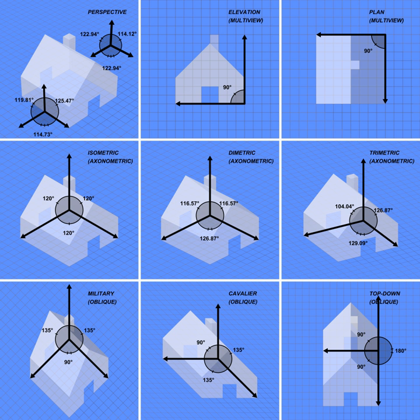It is shown like a three-dimensional object. Auxiliary views tend to make use of axonometric projection. When existing all by themselves, auxiliary views are sometimes known as pictorials.